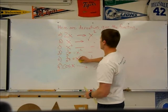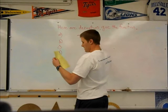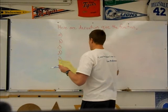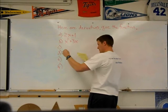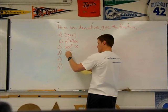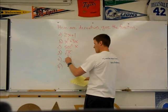Same directions here. First one is 2x plus 1. Next one, x squared plus 3x. Next one, secant squared x. Square root x. 1 over cube root x.